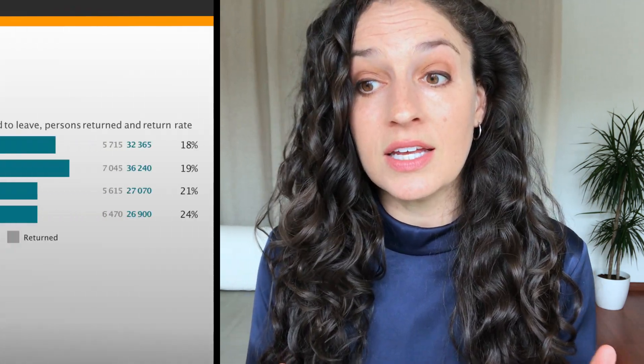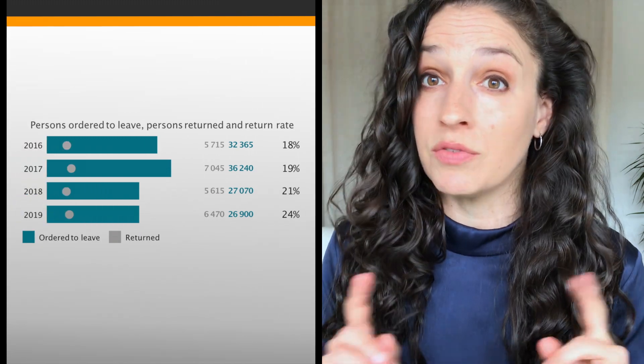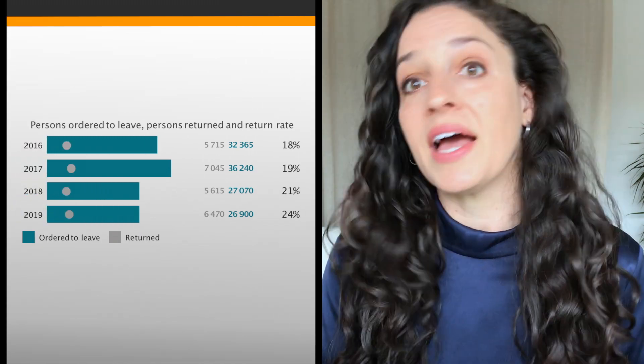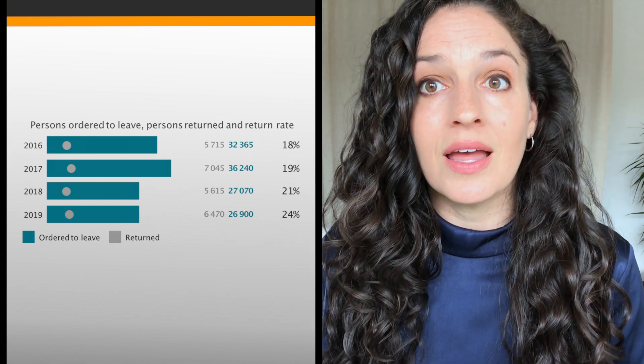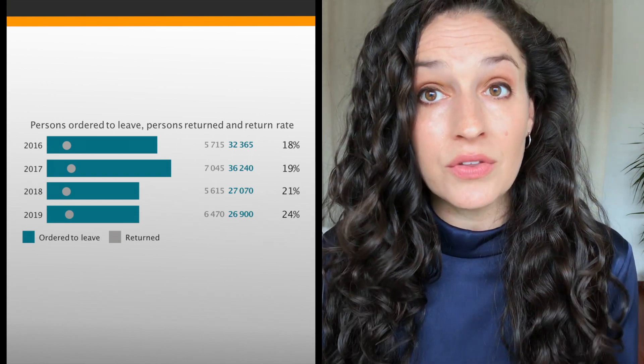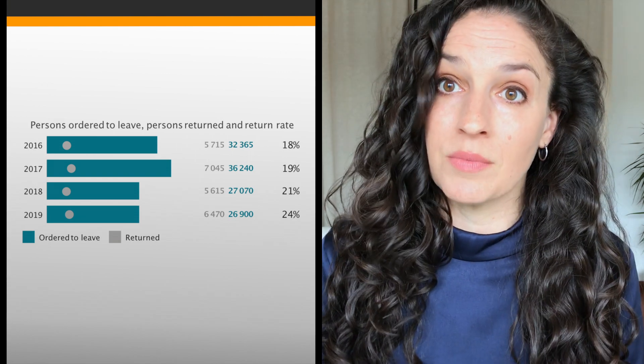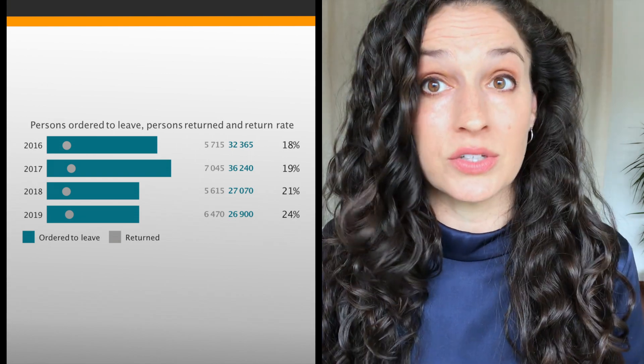Now let's look at one measure of irregular migration. We look at the number of people ordered to leave in a given year compared to how many actually did return. In Italy's case, only between 18 and 24% of those ordered to leave actually did leave the country. That means the others were likely to end up in some kind of irregularity — remaining without the right to stay.